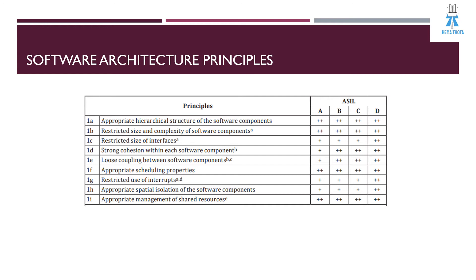Coming to principle 1f — we should have appropriate scheduling properties, which is highly recommended for ASIL A, B, C, and D. Principle 1g is restricted use of interrupts. When we use interrupts, we should have a clear priority defined for them. Principle 1h is appropriate spatial isolation of the software components.